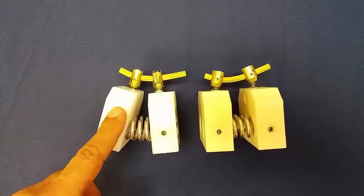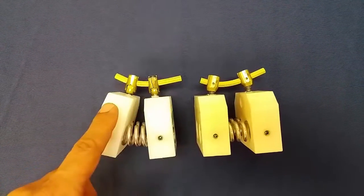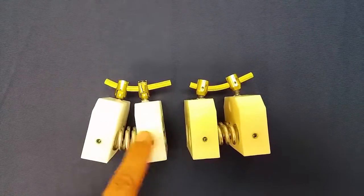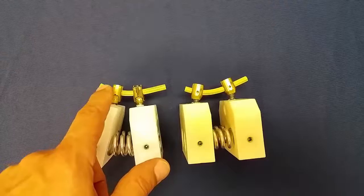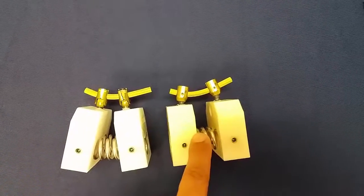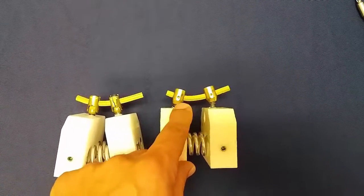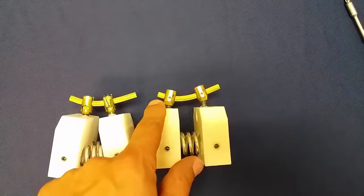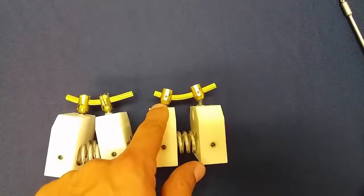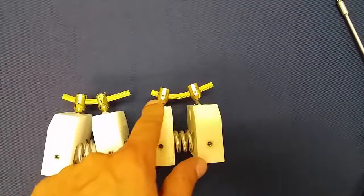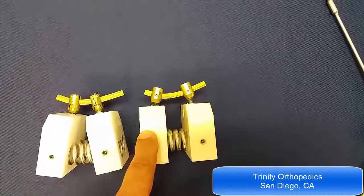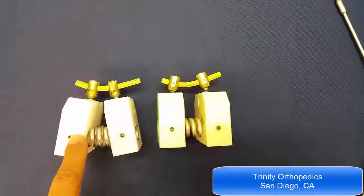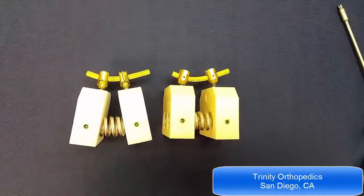You can clearly see the difference between the restore pedicle screw system which ensures that restoration of lordosis is achieved by using a curved rod versus what typically happens with a regular or conventional polyaxial screw system where a curved rod becomes accommodated by the receiver elements, a universal joint without the restoration of lordosis as signified here by the two parallel blocks as opposed to angled blocks on the left side.